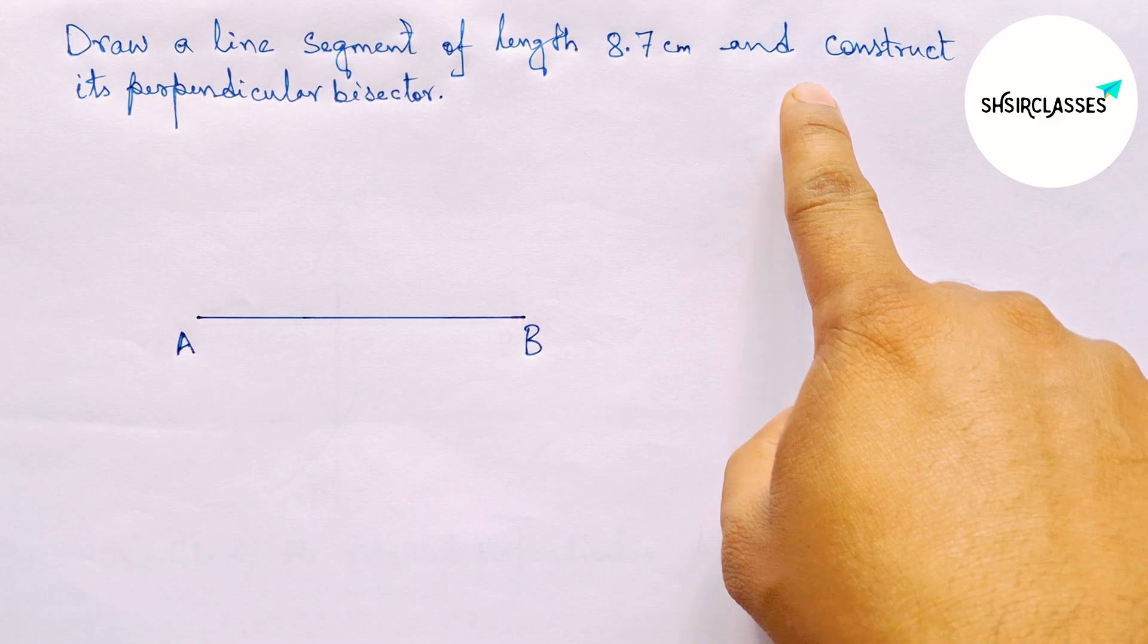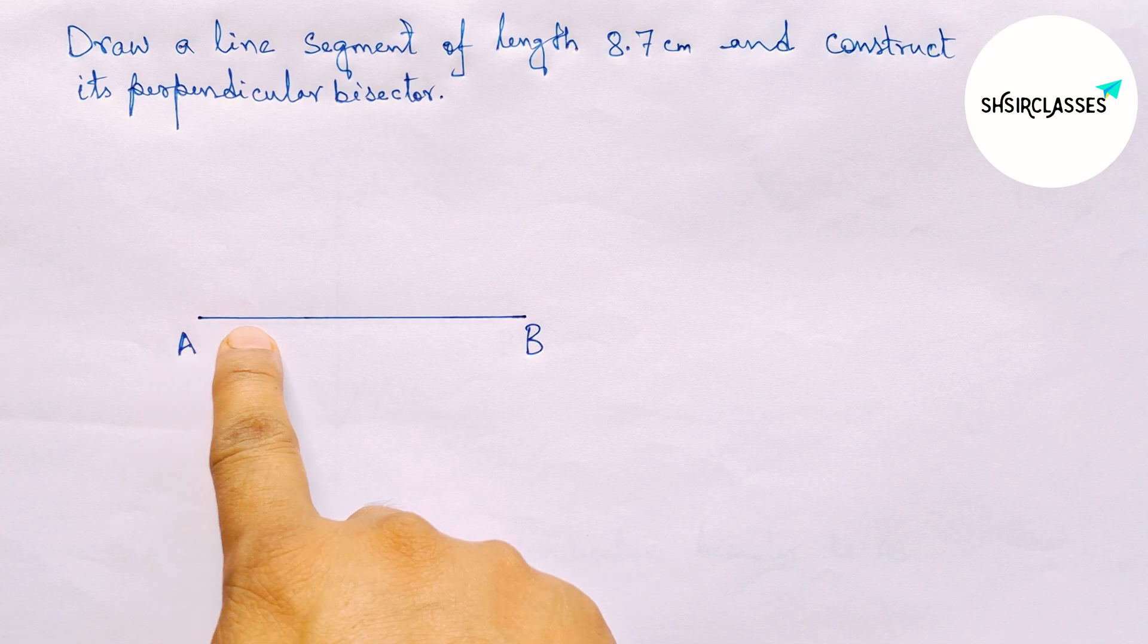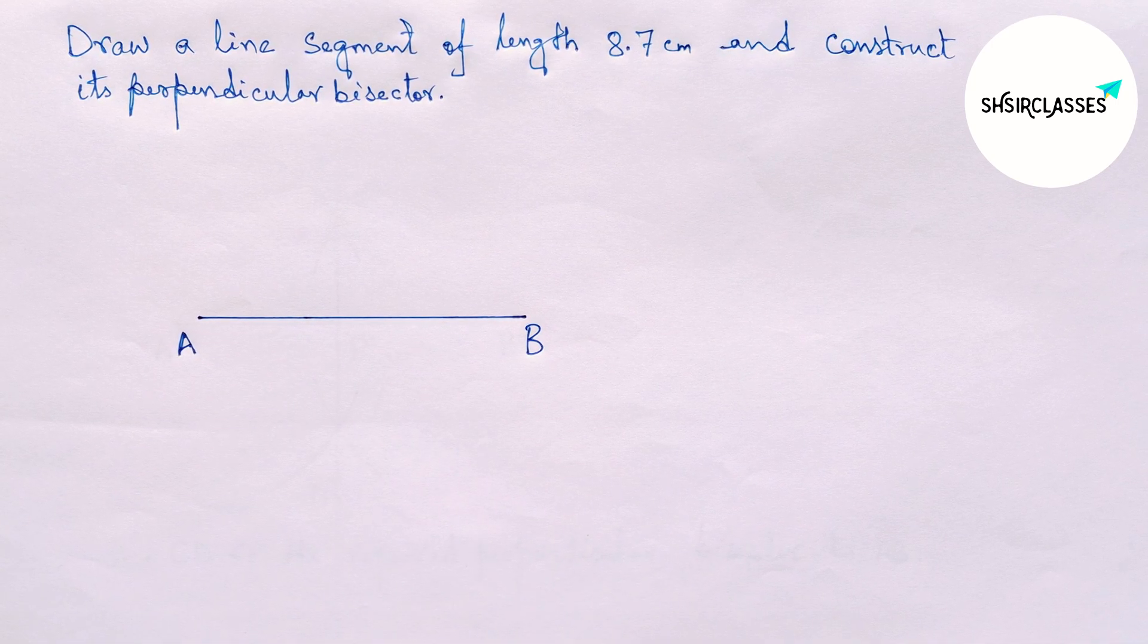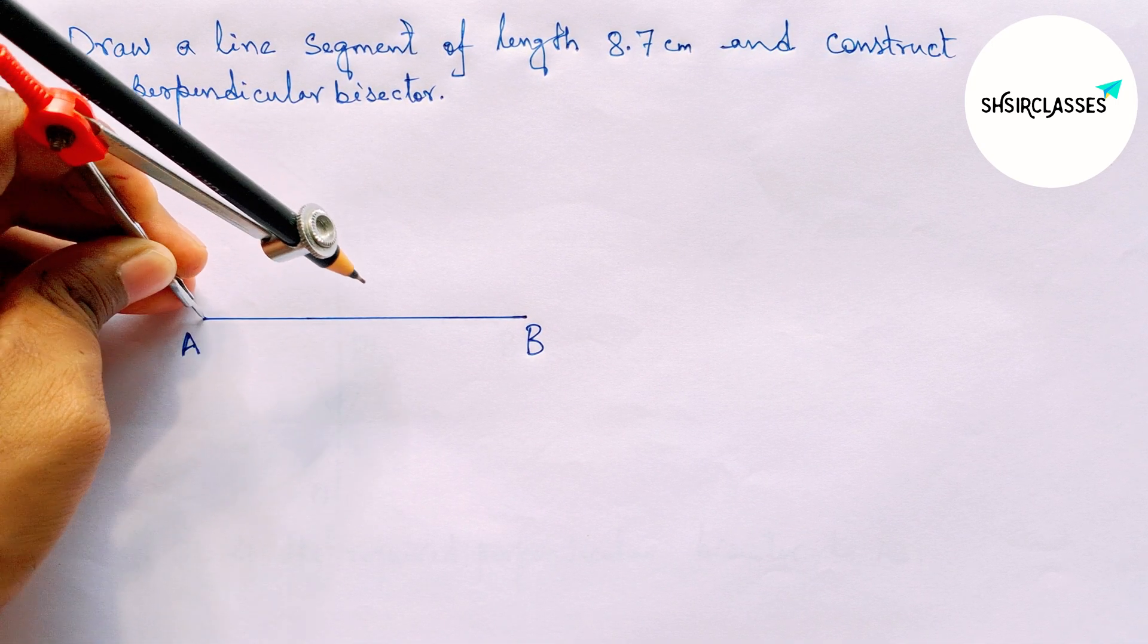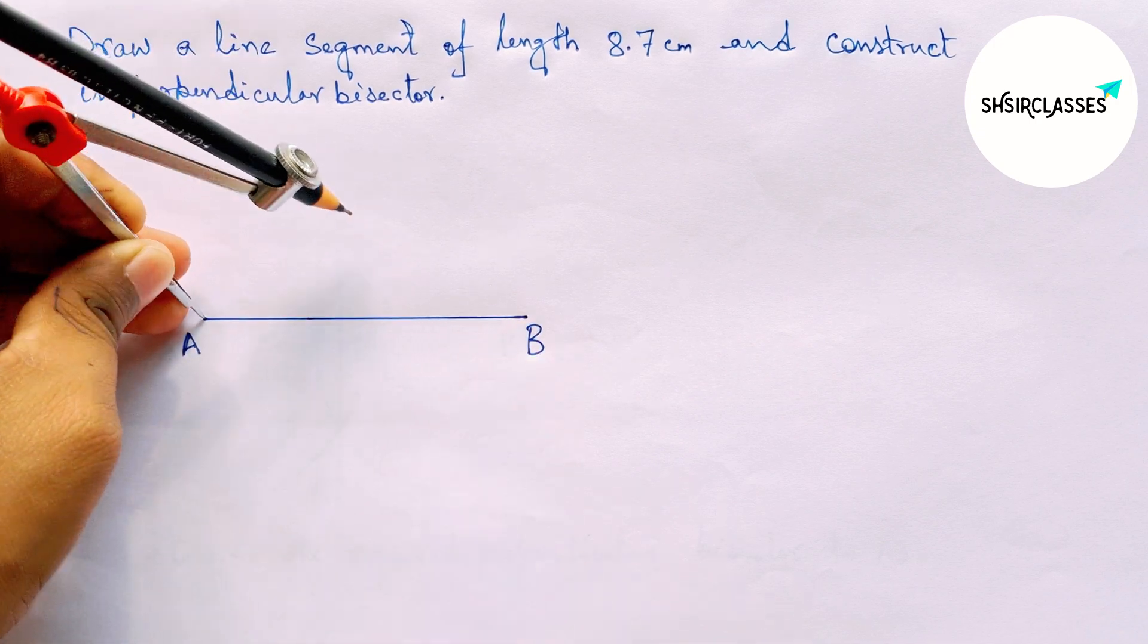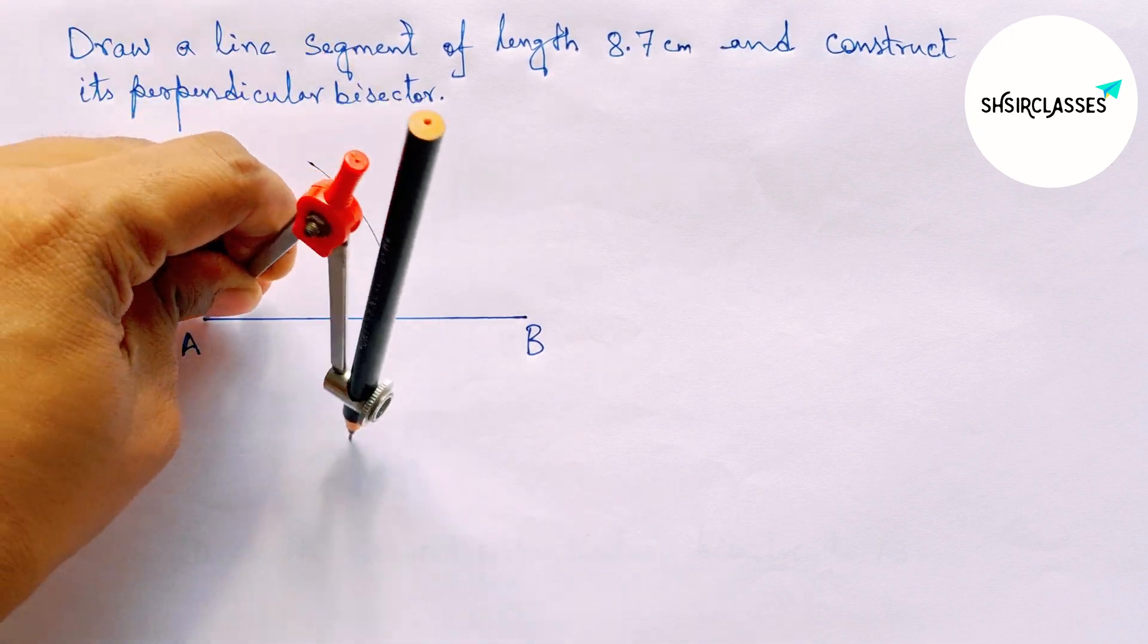Now construct its perpendicular bisector to the line AB with the help of a compass. Put the compass on point A and taking greater than half of AB, draw an arc by this way.